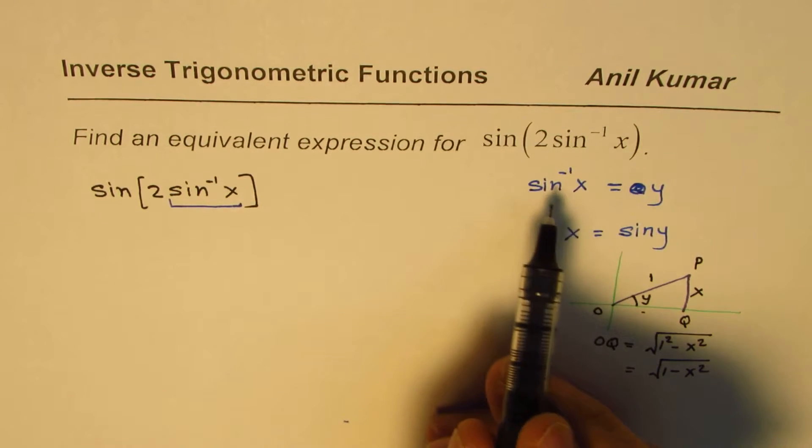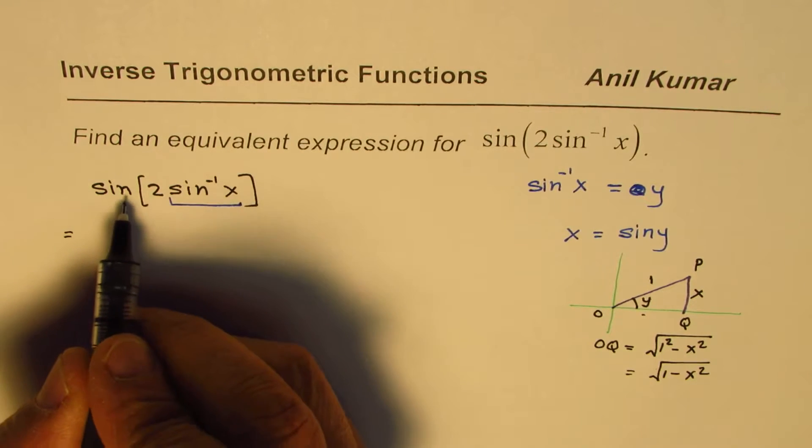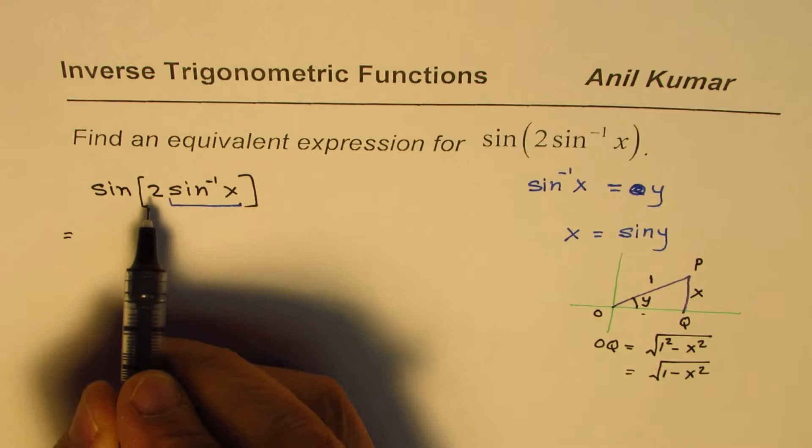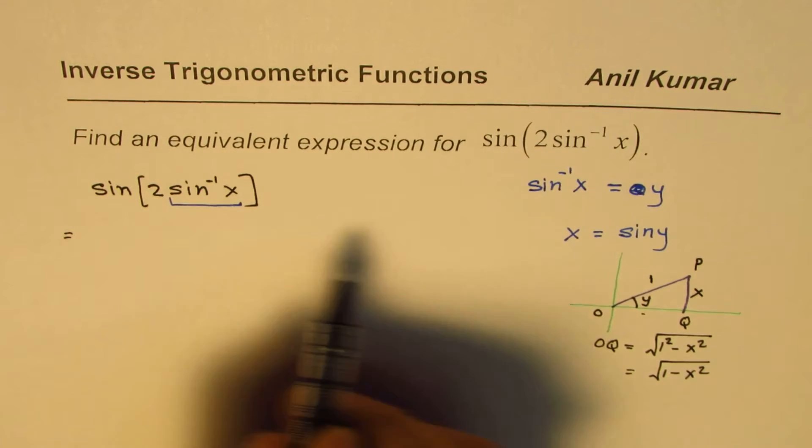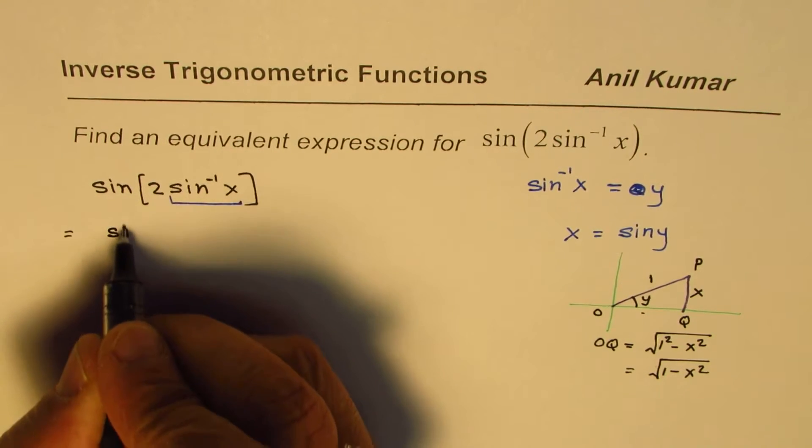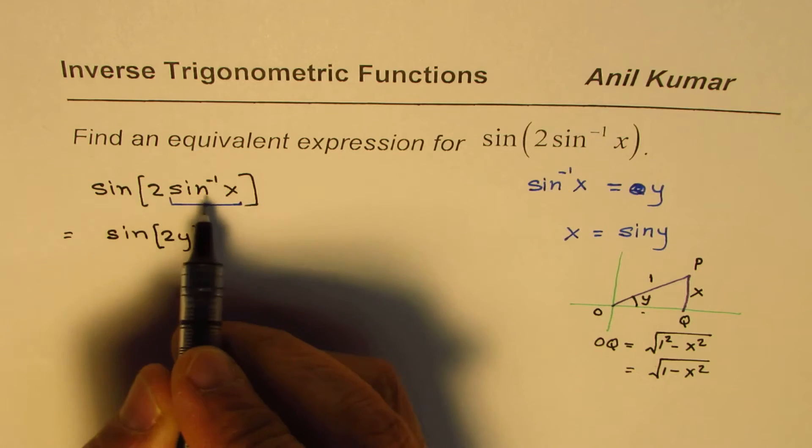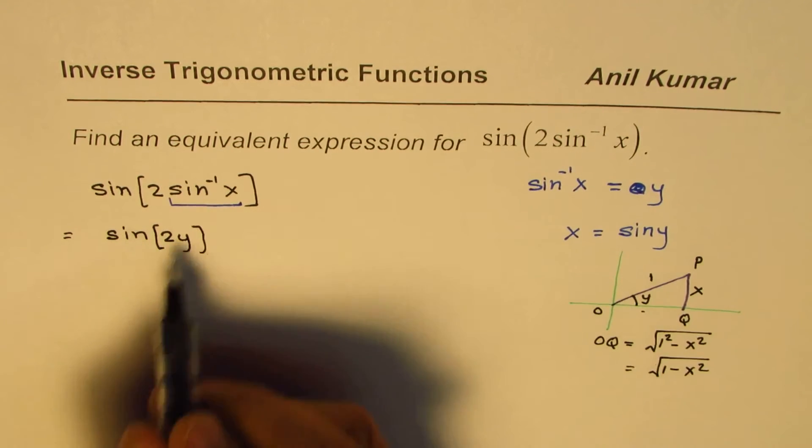So what we have done, we have done a substitution. We are saying sine of 2 sine inverse x, and we are writing sine inverse x as y. So we can write this as sine of 2y.